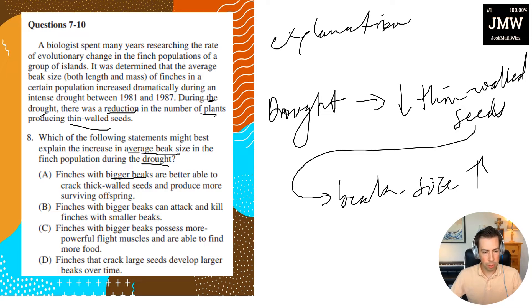Finches with bigger beaks are better able to crack thick-walled seeds and produce more surviving offspring. So basically what do we have to assume here? We have to assume that if thin-walled seeds go down, there's going to be thick-walled seeds. The other thing we assume is, well, they just tell us that is going to help produce more surviving offspring. So this one looks pretty solid. Looks like it could be the right answer.